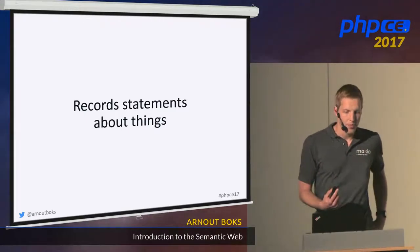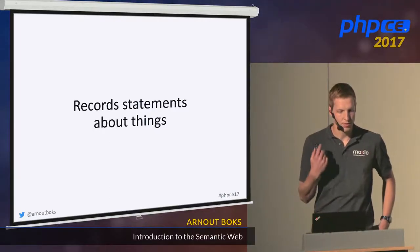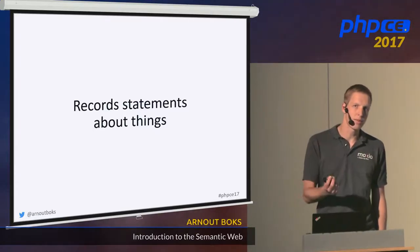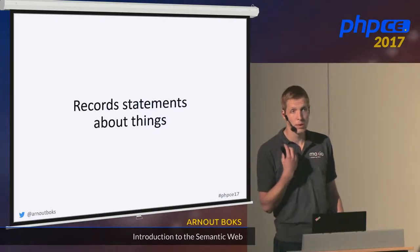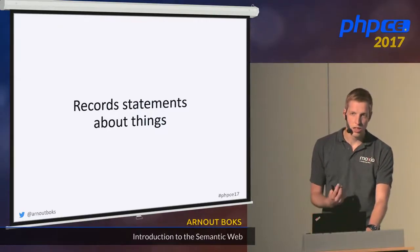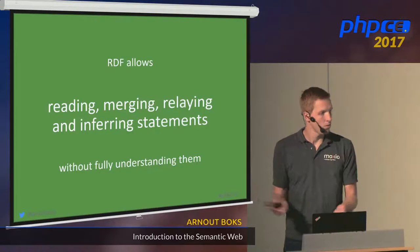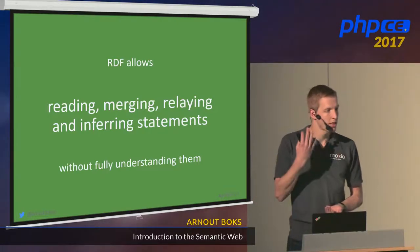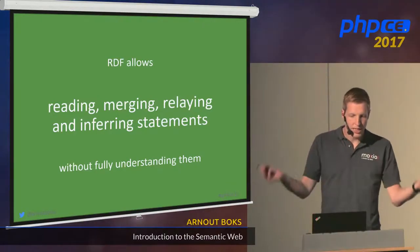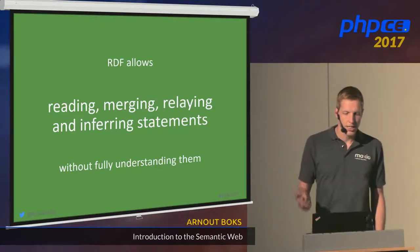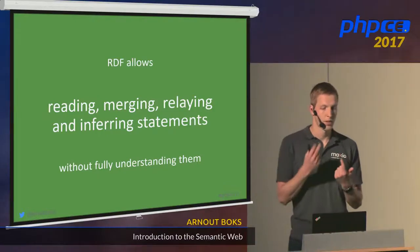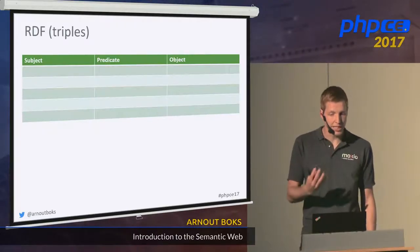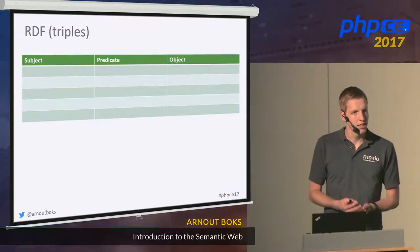The cornerstone of the Semantic Web is formed by RDF, the Resource Description Framework. What RDF does is it records statements about things. We intentionally say 'statements' because we don't know whether these statements are true — people can say anything on the web, they can claim anything. But what's special about RDF is that it allows agents to read, merge, relay, and infer statements from data without fully understanding the meaning of that data.